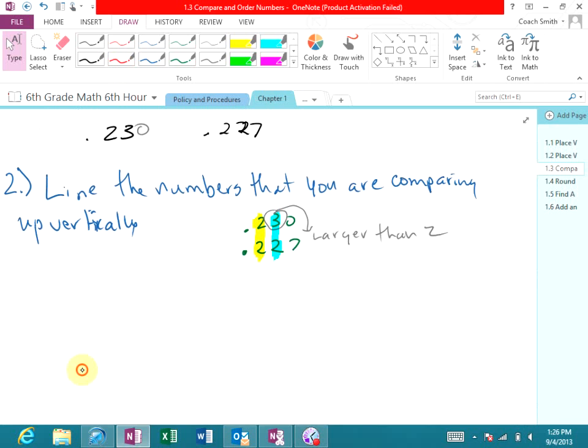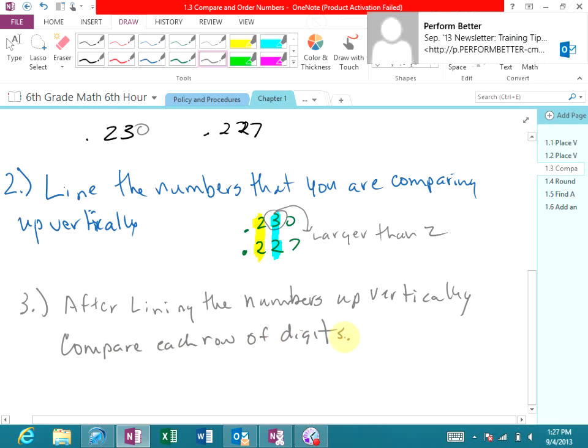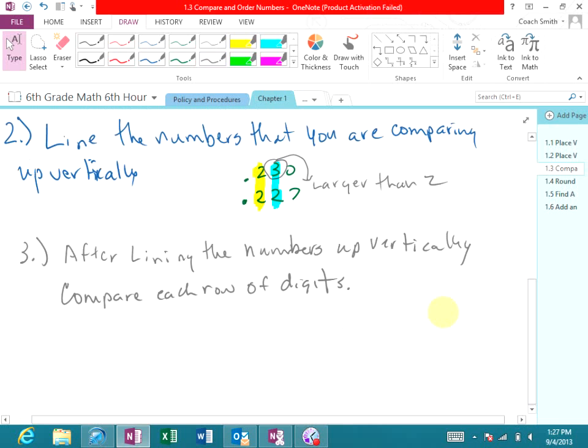I guess we could say step three. Step three, after lining the numbers up vertically, compare each row of digits. That's what we just did. All right, let's look at another one. I'm going to leave that there so you can copy it down.